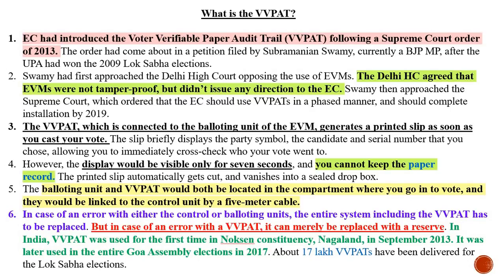What is VVPAT? The Election Commission introduced the Voter Verifiable Paper Audit Trail, known as VVPAT, after a Supreme Court order of 2013. The VVPAT is connected to the balloting unit of the EVM — the unit where you cast your vote. It is activated when the control unit is activated by the polling officer.